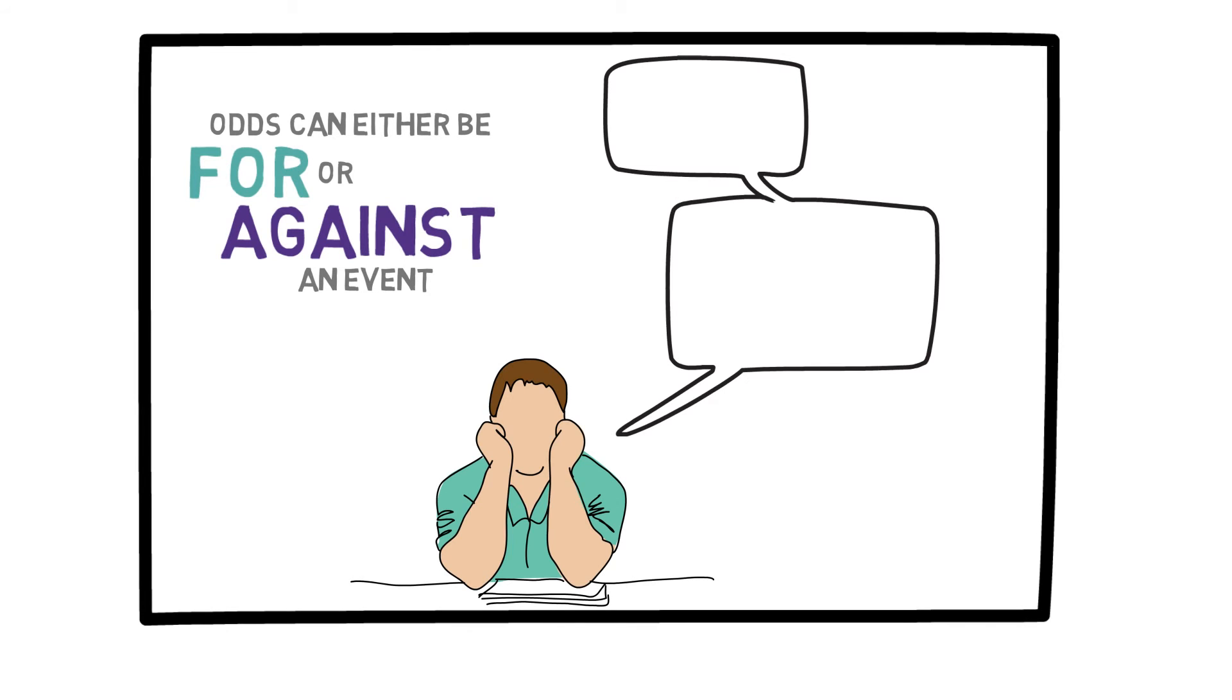Odds can either be for an event or against it. We can summarize this concept by saying that the odds in favor of event A, by definition, are the probability of that event to the probability that the event does not happen. In this case, the probability of choosing a red ball to the probability of choosing a non-red ball as given in the previous example. Then, we can simply say that the odds against event A are just the opposite, the probability that A does not occur to the probability that it does occur.